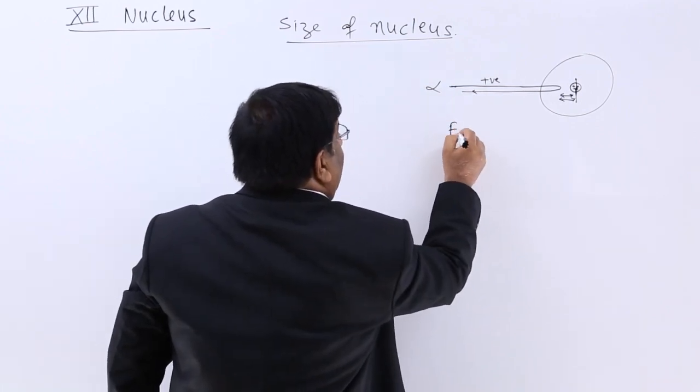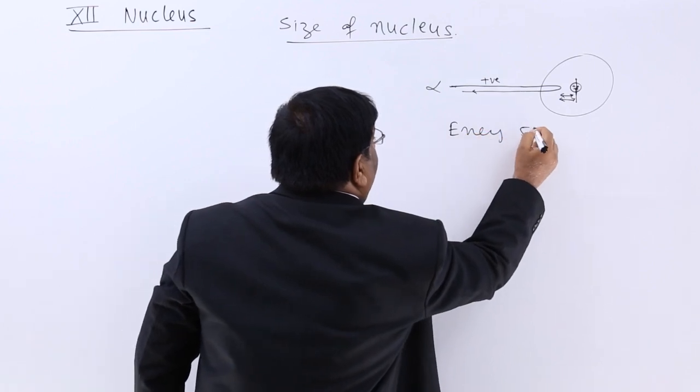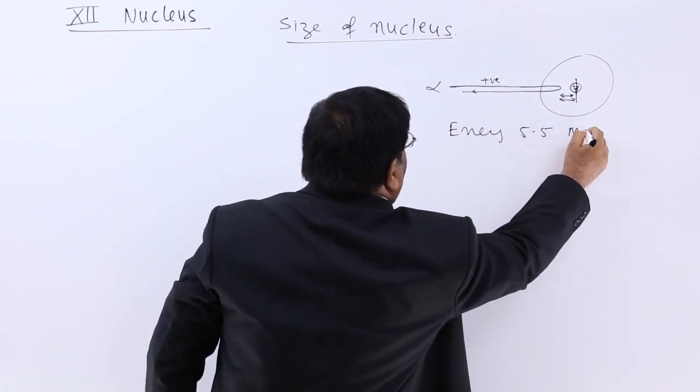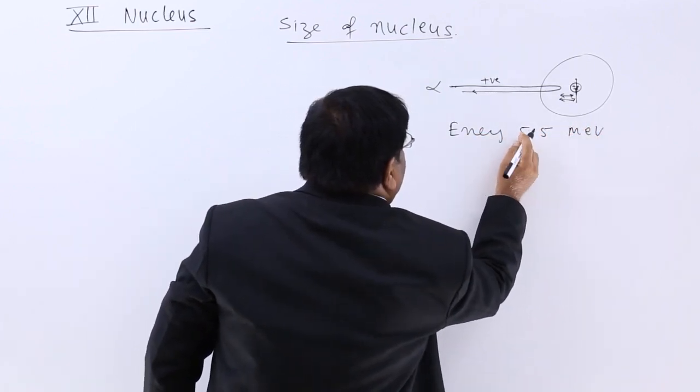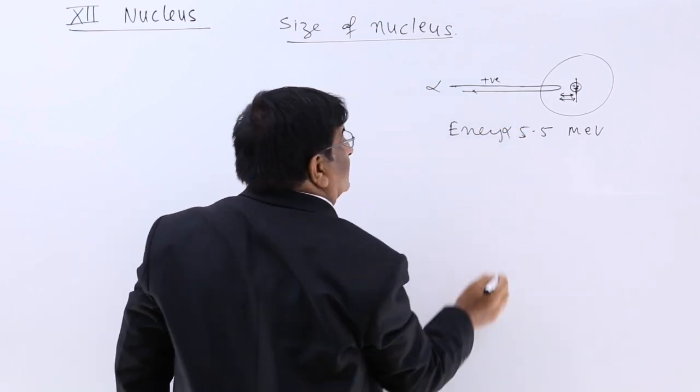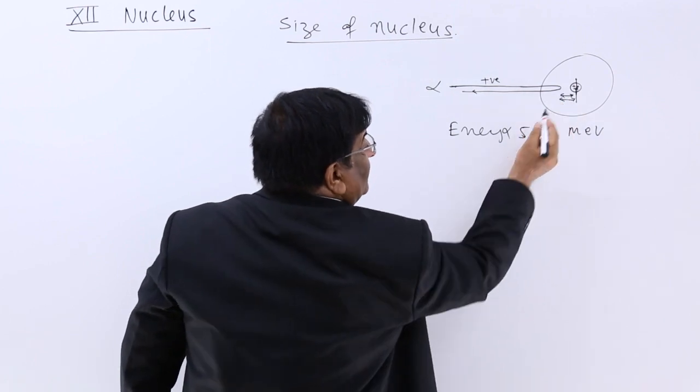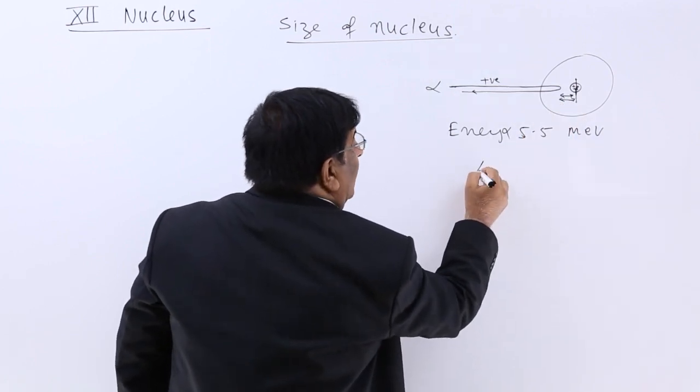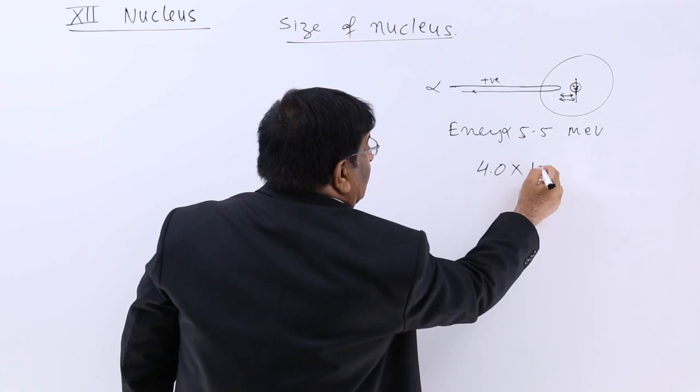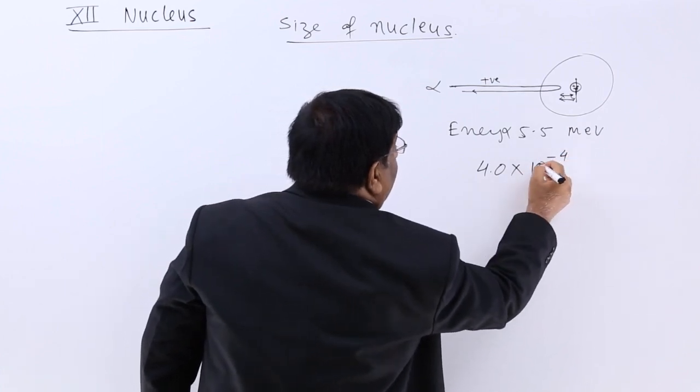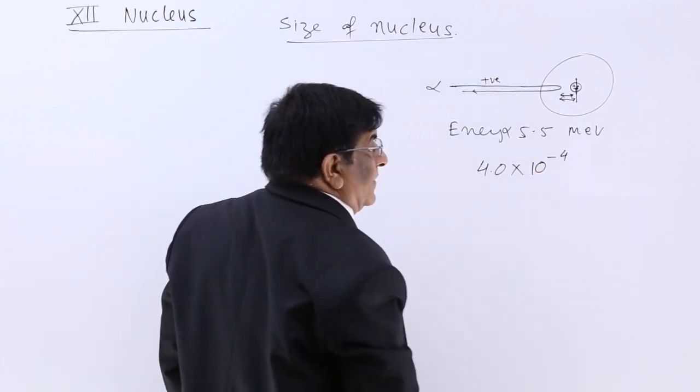The energy of alpha particle was 5.5 million electron volts. This was the energy of the alpha particles and they went very close to it. How close to it? This distance of closest approach in alpha particle was 4.0 into 10 to the power minus 14.